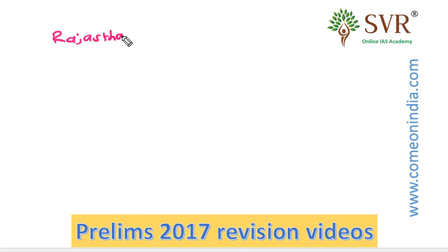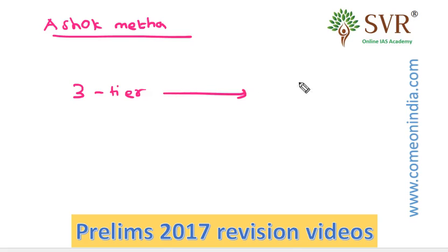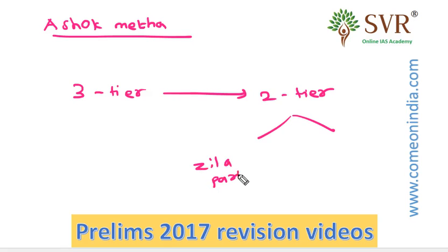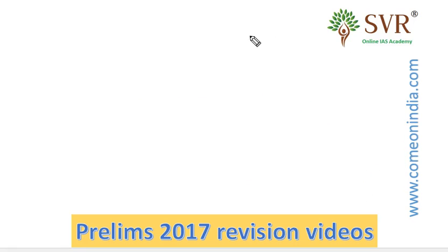The second committee is the Ashok Mehta Committee. Its important recommendation is that the 3-tier system of Panjayatraj should be replaced by a 2-tier system. The 2-tier system consists of Jilla Parishat at the district level and Mandal Panjayatraj below that. Mandal Panjayatraj should consist of a group of villages with a total population of 15,000 to 20,000.